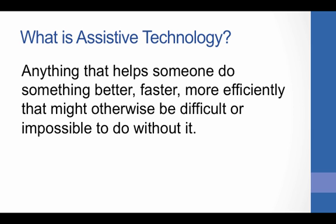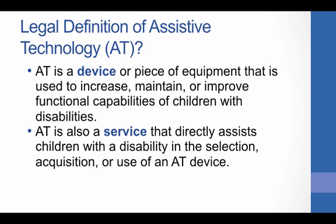We'll start by defining assistive technology, or AT, as anything that helps someone do a task better, faster, or more efficiently that might otherwise be difficult or impossible to do without it. AT includes devices and services, so let's look at a more descriptive legal definition.